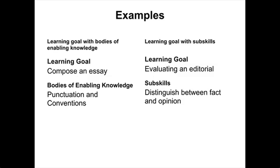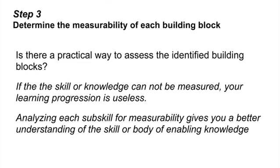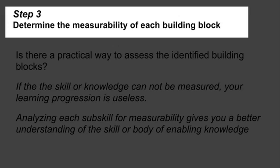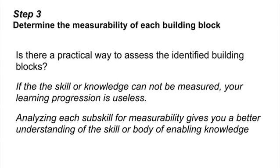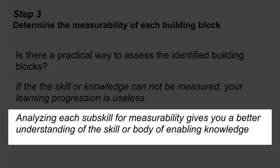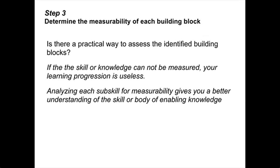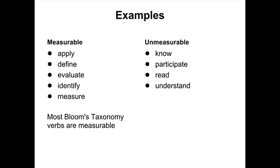Here are a couple of examples of learning goals with enabling knowledge and sub-skills. Step 3 is to determine the measurability of each block. The key point here is that analyzing these sub-skills or enabling knowledge gives you a better understanding of the skill. Sometimes I would just assume I knew what a skill looked like and didn't think much about how I was going to measure it — and then when students worked on it, it would dawn on me that I didn't really understand what it was. Some examples of measurable and unmeasurable verbs are shown here.